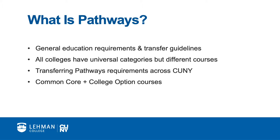Importantly, Pathways guarantees that general education requirements fulfilled at one CUNY college will transfer seamlessly and complete that requirement at any other CUNY college. The Pathways curriculum consists of two main parts: a 30-credit Common Core, which exists at all CUNY campuses, and the college option requirements that only pertain to colleges that grant bachelor's degrees.